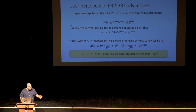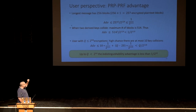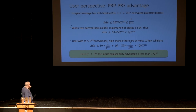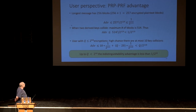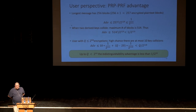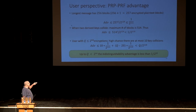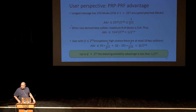Next, what is the PRP-PRF advantage? The longest message is 256 blocks, which means 257 blocks have been encrypted because there is one more block encrypted in AES-GCM to mask the GHash, the universal hash. The PRP-PRF advantage is 257² over 2^{129}. When two keys collide, the number of blocks is twice that — 514 blocks. If the customer has encrypted at most 2^{64} files, we do this computation and the indistinguishability advantage is less than Q over 2^{110}. We are good here.